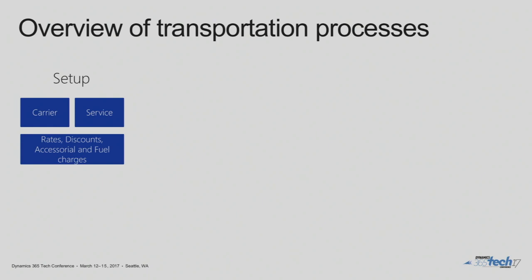We can set up different carriers in our transportation system and map those carriers to different ways of calculating freight, depending on their services or the carrier contracts available. From those carrier contracts, you can map in Operations the rates, discounts, or fuel surcharges that should be applied to an order when you select that carrier. I'll go deeper into that detail when I demo our new engine a bit later.